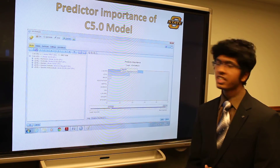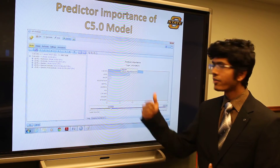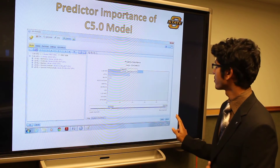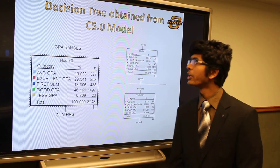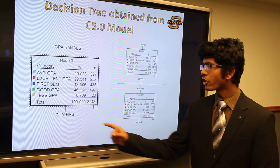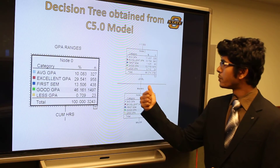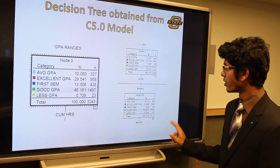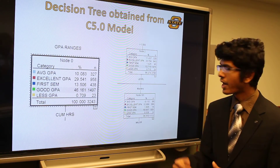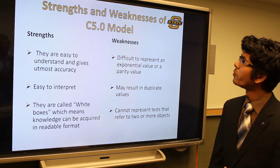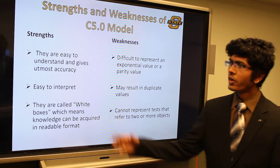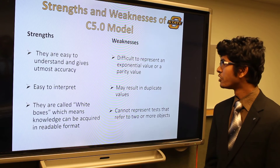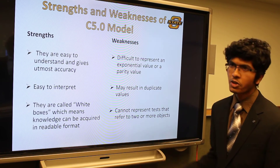This is the output decision tree from the C5.0 model. The first split is based on cumulative hours, the second split is based on level, and the third split is based on major — in order of predictor importance values. The strengths of the C5.0 model are that it is easy to interpret and very accurate. Some weaknesses are that it results in duplicate values and it is difficult to represent exponential values in it.